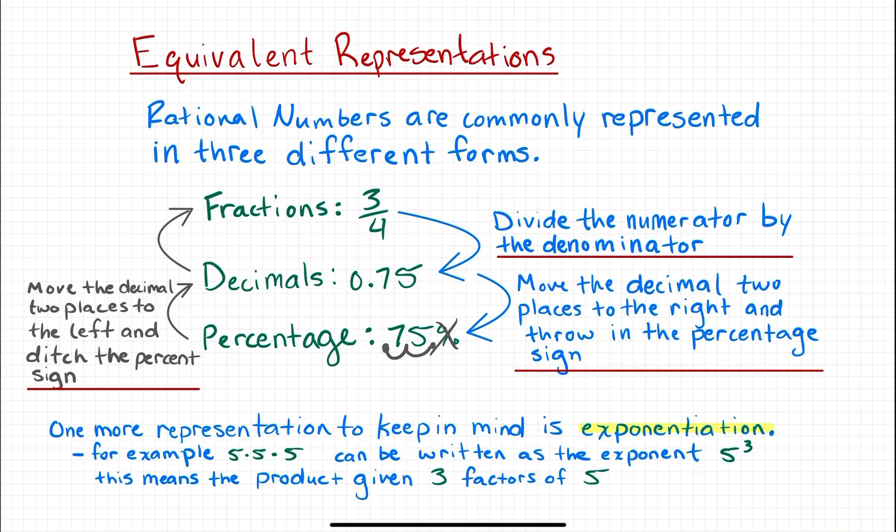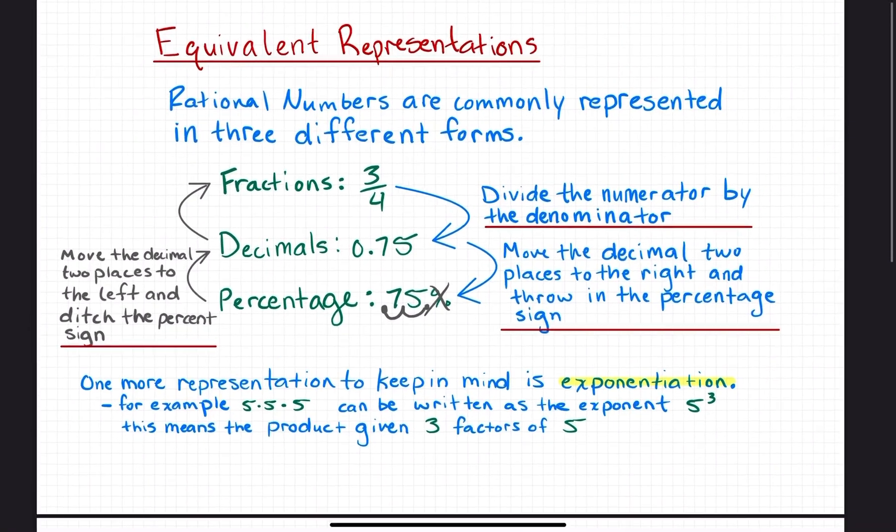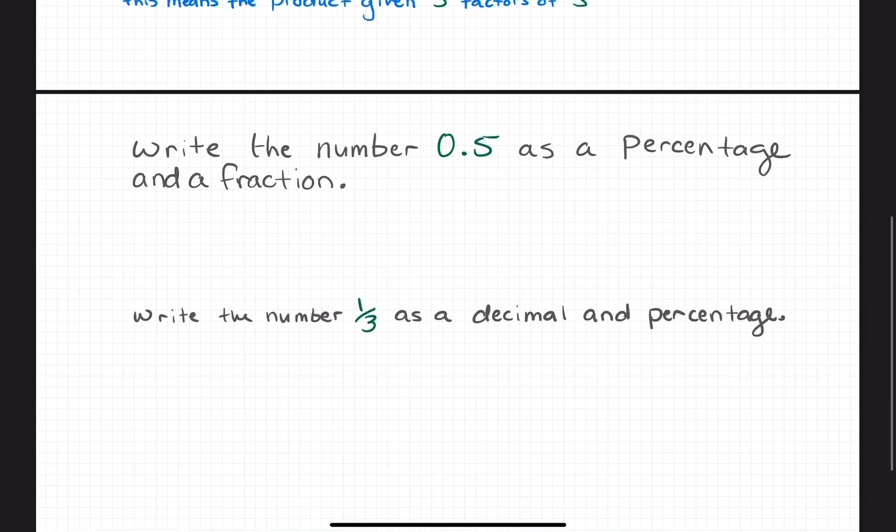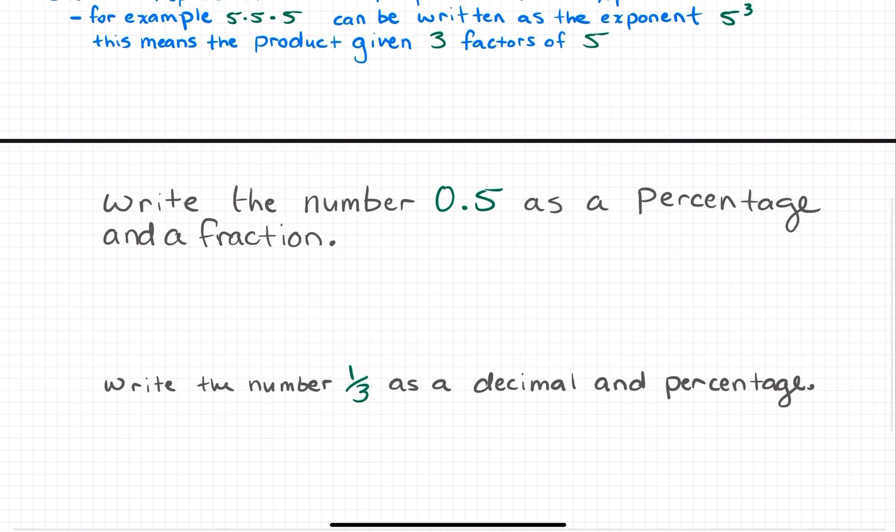Let's go over some examples of why this information is important, some questions you might be asked on an exam. The first question says write the number 0.5 as a percentage and a fraction.